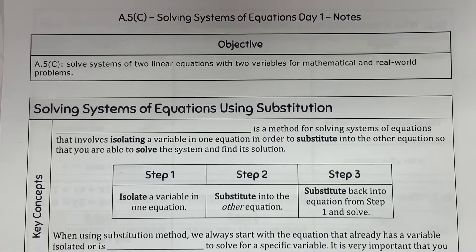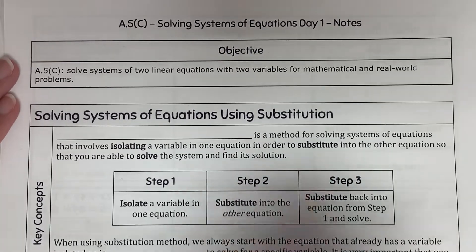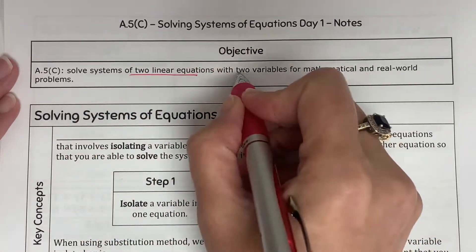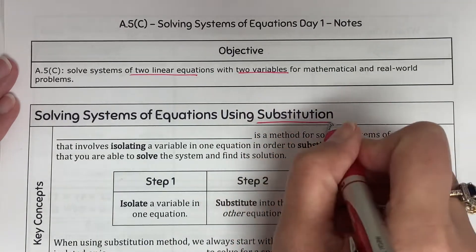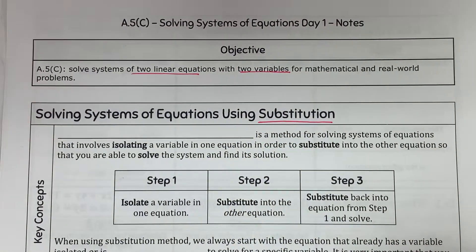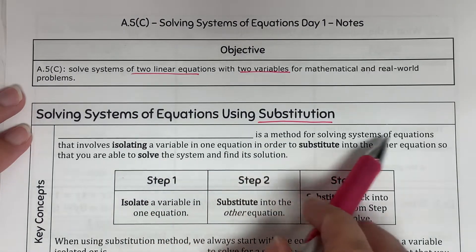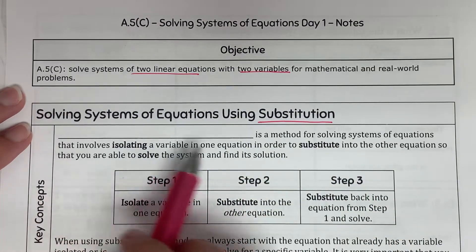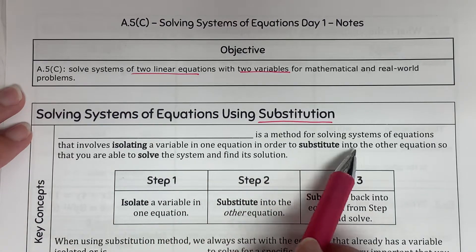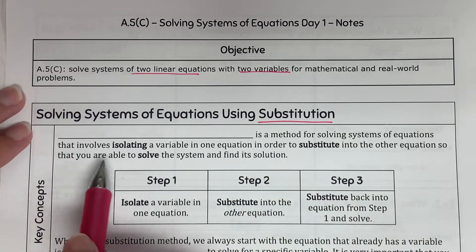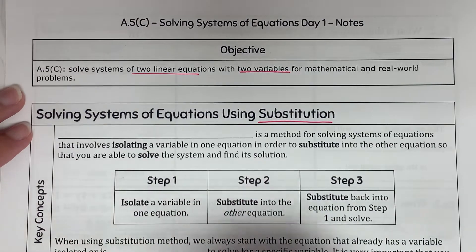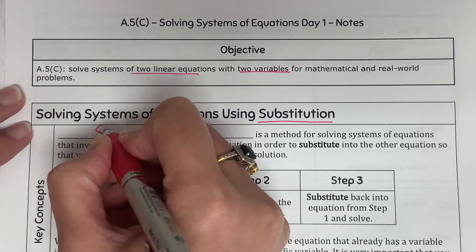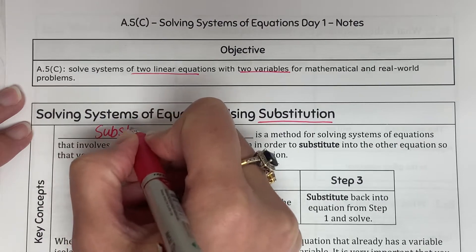Today we're working on the second method for solving systems of equations. A system of equations means you have two linear equations with two variables. The specific method we're using today is substitution — you've already done the graphing method. Substitution is a method for solving a system of equations that involves isolating a variable in one equation in order to substitute it into the other equation to find the solution.